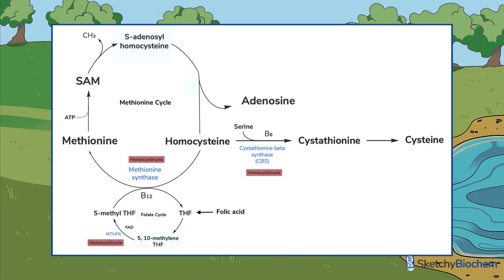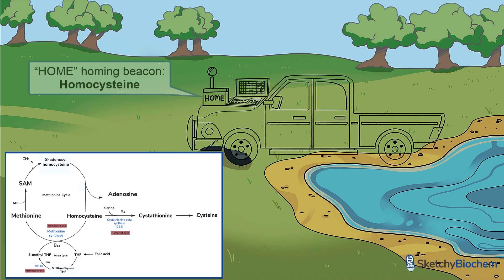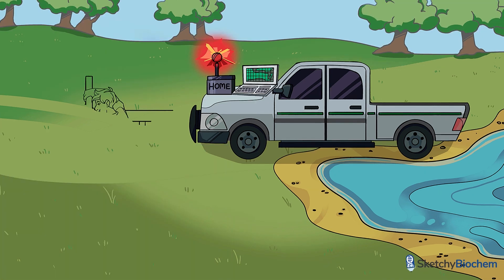Let's start with homocysteine, represented by the homing beacon on the hood of the truck. As you can see from the diagram, homocysteine can be turned to methionine by remethylation, or to cysteine by transsulfuration.